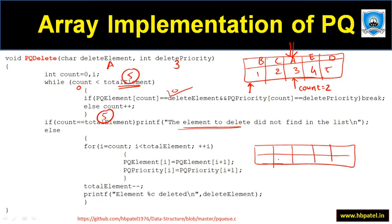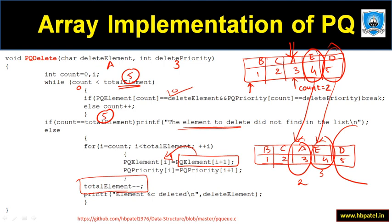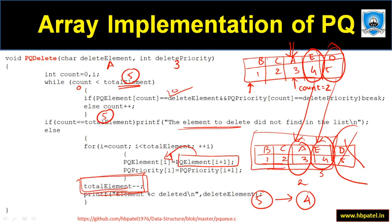Once the element to delete is found at index two, we shift all subsequent elements one position back by copying index i+1 into index i. So the fourth location is copied into the third, and so on. After the shifting loop, we decrement total elements — it was five and is now four. The last position is no longer used, so the array effectively has four elements remaining.